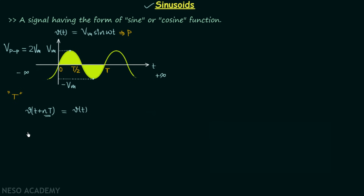Now let us do the shifting of the signal waveform towards the right by nT. This means we will have a new signal V(t − nT), and this time also the new signal will be equal to the old signal. This condition we call the condition for a signal to be periodic — the condition of periodicity. Any signal in order to be periodic should follow this condition.